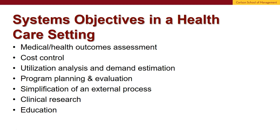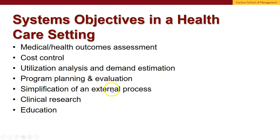As you think about these different types of systems, keep in mind what your objectives are. This gets back to the issue of what's measurable so that you can manage things. Are you trying to look at outcomes assessment — are patients getting better or worse? Are you looking at cost control? Are you looking at utilization review or analysis to know how many services you're using and estimate how many people will need services or insurance contracts in the future? Are you doing this for program planning and evaluation — for example, a new program to reduce opiate addiction? Are you trying to simplify an external process through technology or reengineering a multiple-step process?